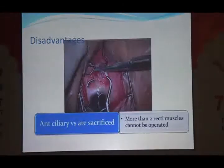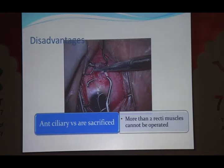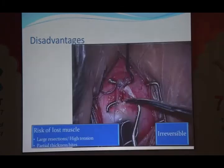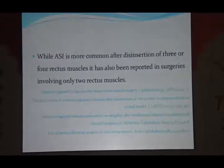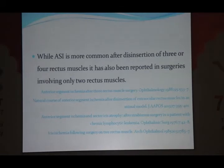We close the conjunctival position with 8-0 vicryl sutures. But resection has its own major disadvantages. Because we cut the muscle, we are also sacrificing the anterior ciliary arteries, which limits our surgery to two recti — we cannot operate on more than two recti at the same sitting, otherwise it will lead to anterior segment ischemia. Another major disadvantage is while cutting, if full thickness bites are not taken, there are chances of a lost muscle or a slipped muscle, which is irreversible. Anterior segment ischemia is more common after disinsertion of three or four recti, but has also been reported when only two recti are cut.